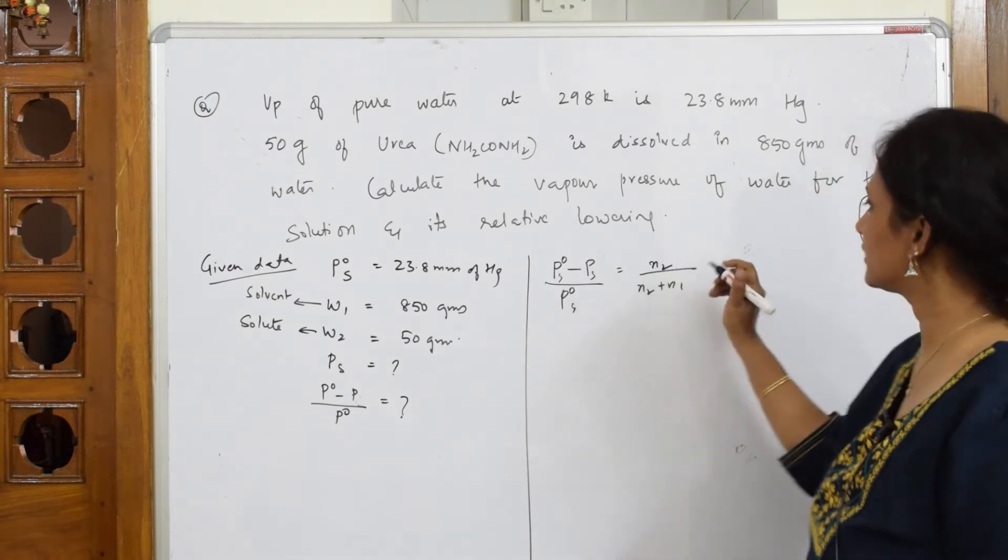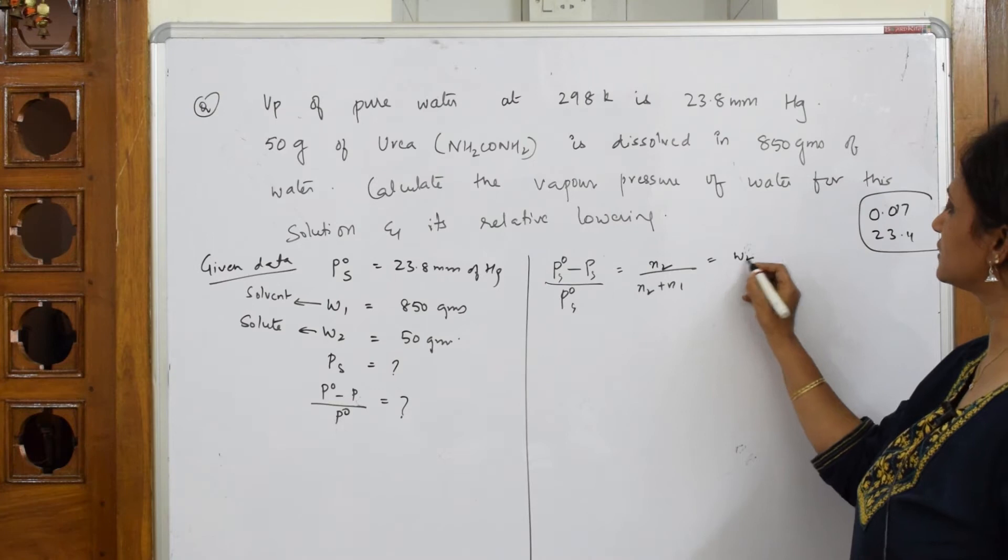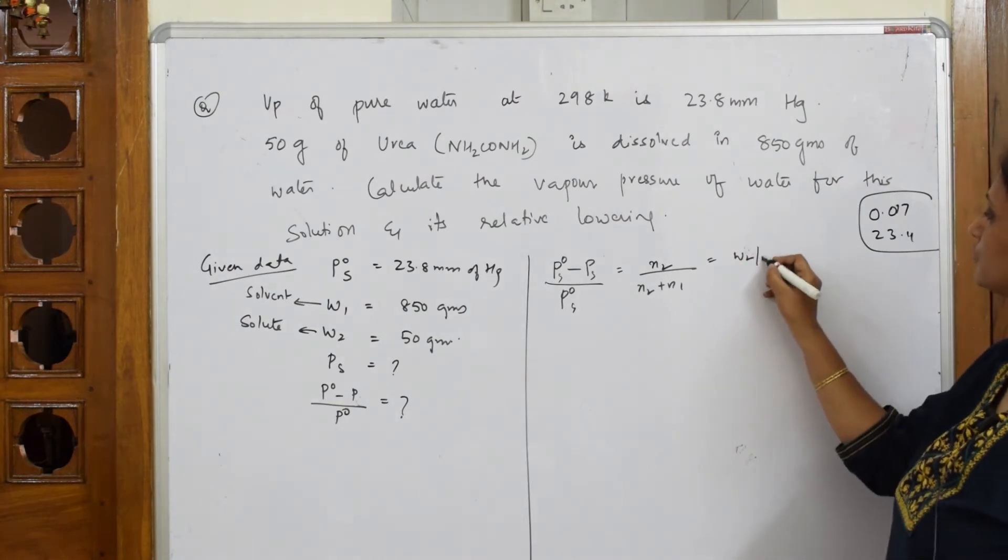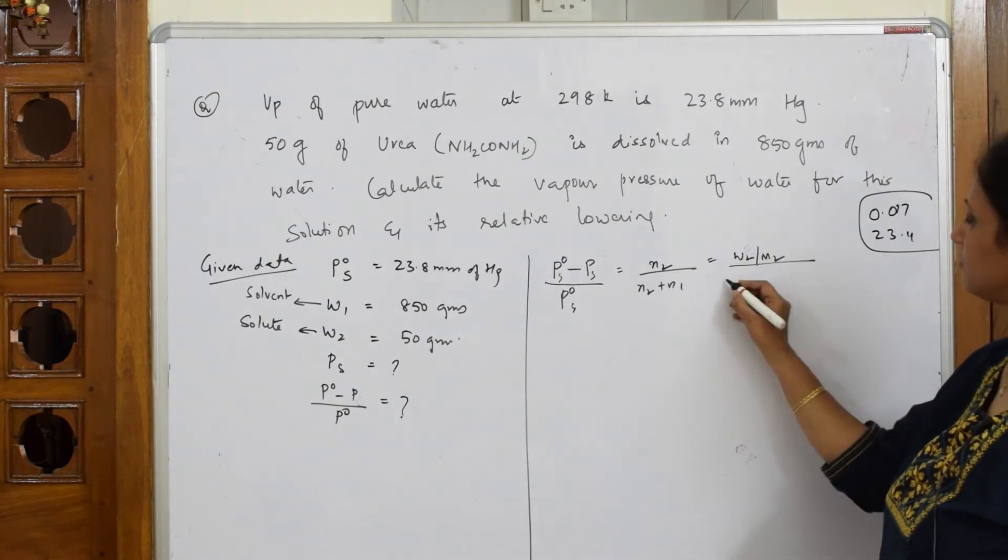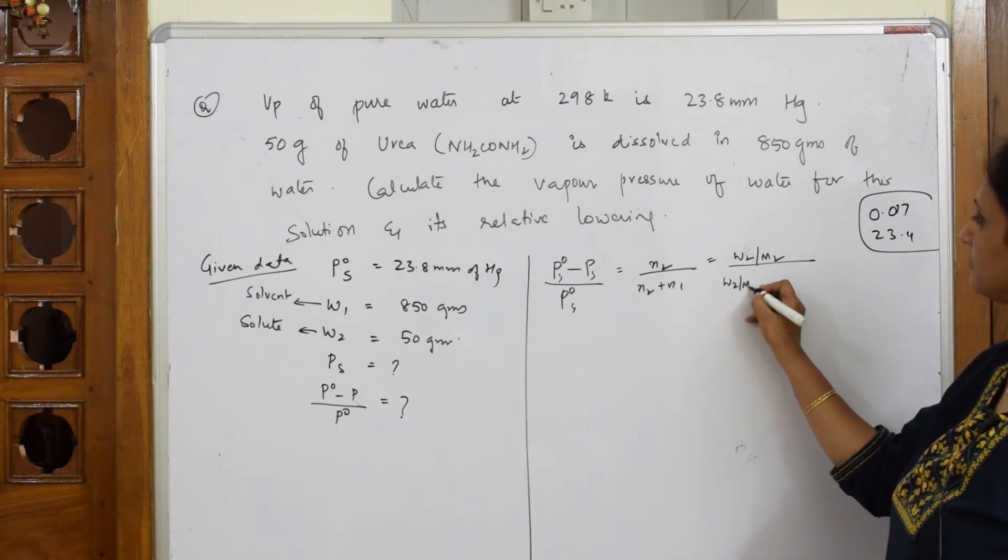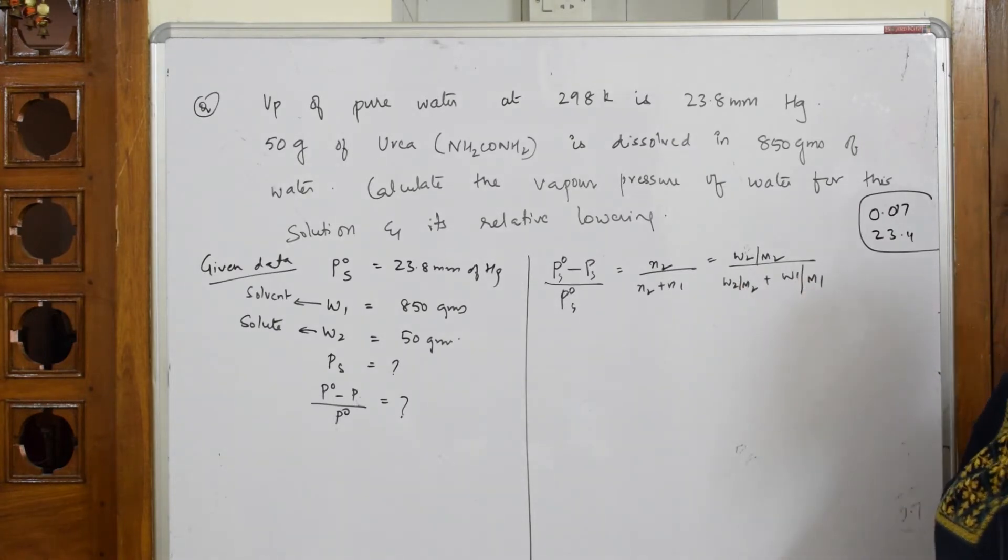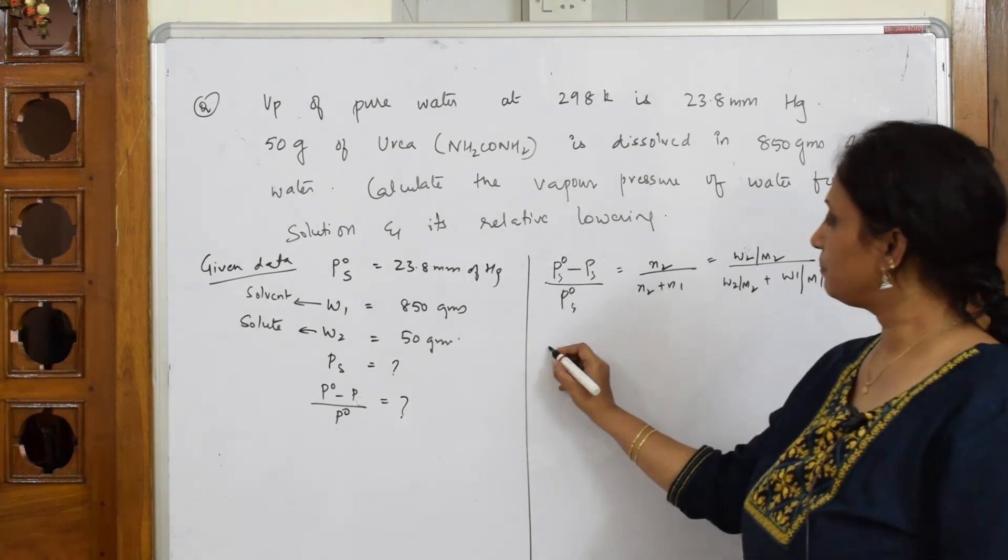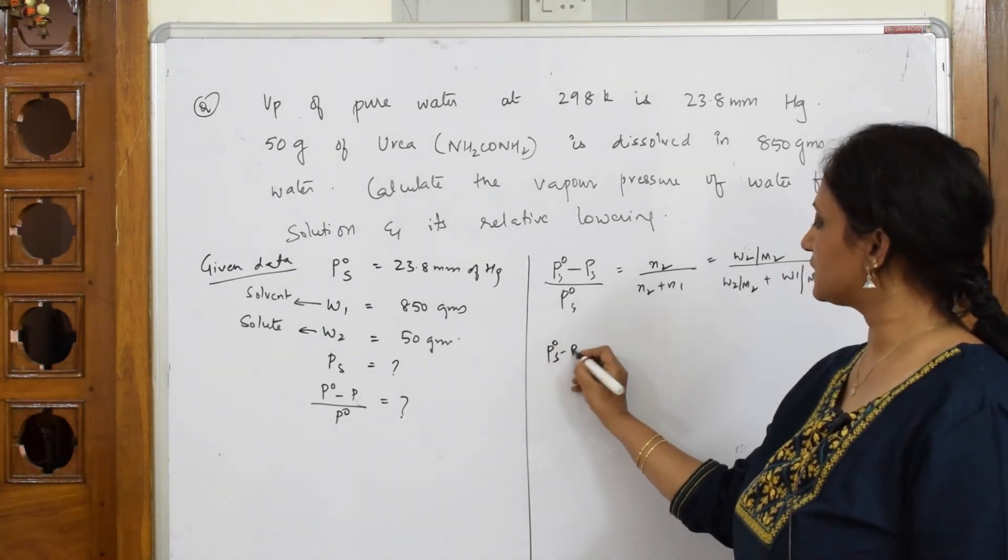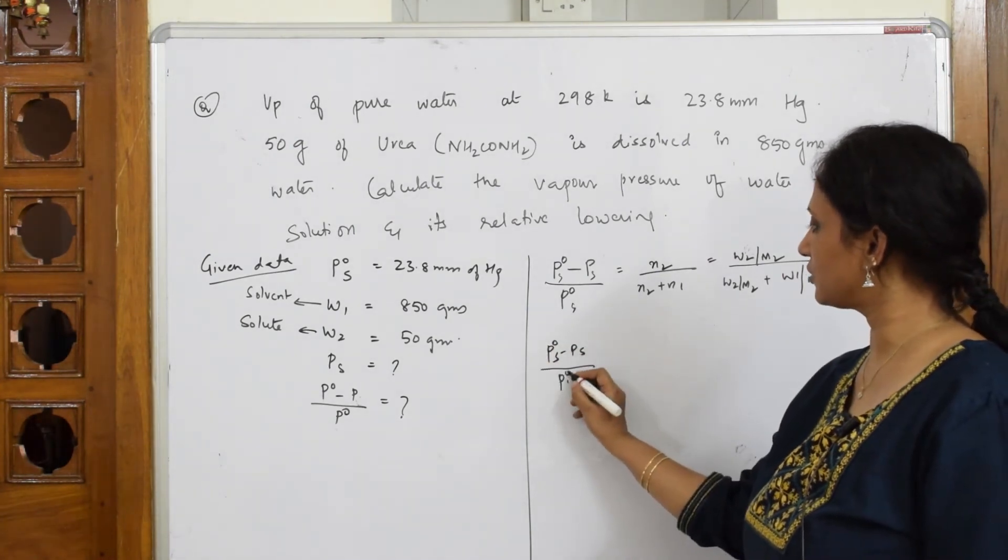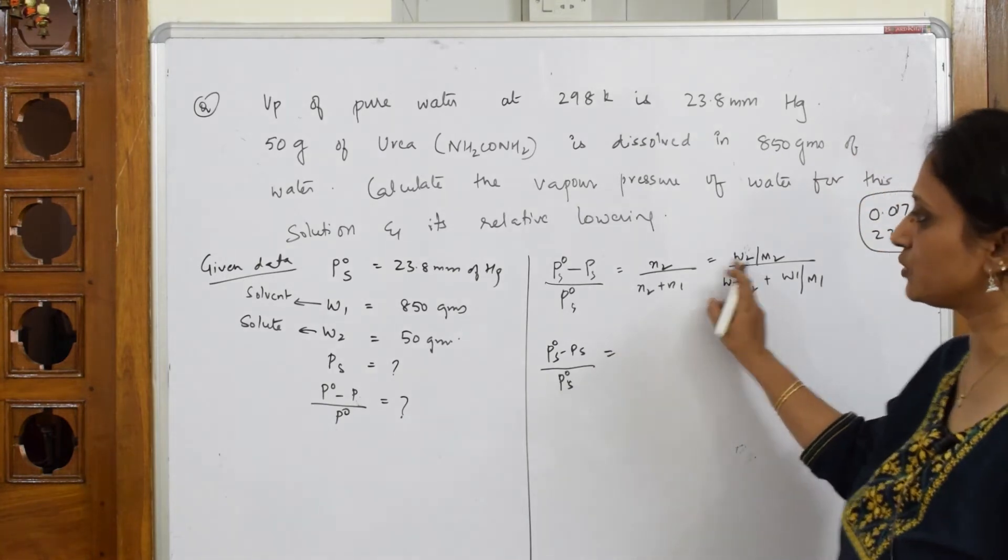Then substitute the weight, isn't it? So that is why I took n2. So n2 is w2 by m2 divided by w2 by m2 plus w1 by m1.